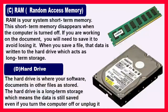The next one is RAM — Random Access Memory. RAM is your system's short-term memory. This short-term memory disappears when the computer is turned off. If you are working on a document, you'll need to save it to avoid losing it — in other words, it loses its data when there is a power cut. So RAM is a temporary storage memory of the computer. When you save a file, the data is written to the hard drive, which acts as long-term storage.